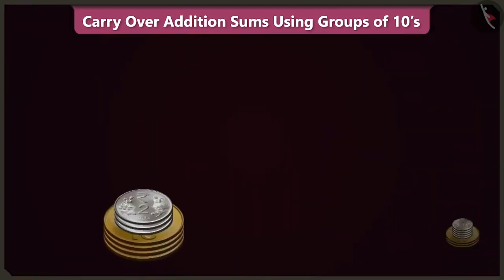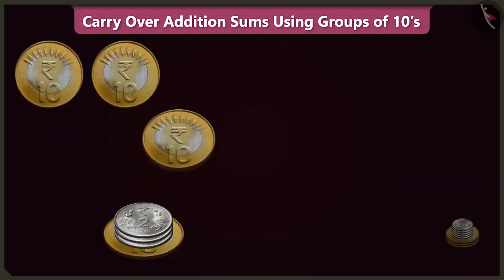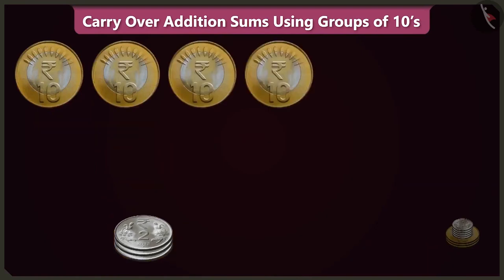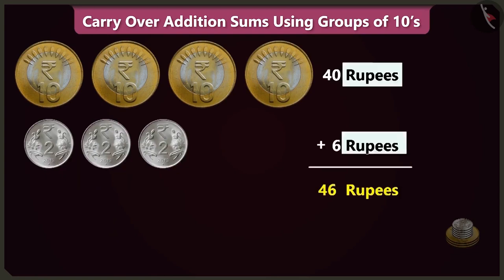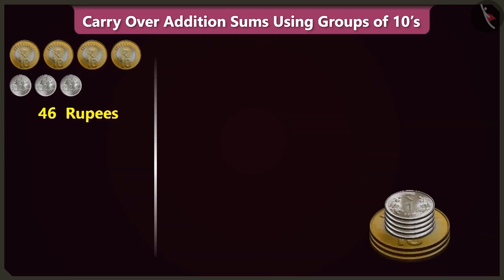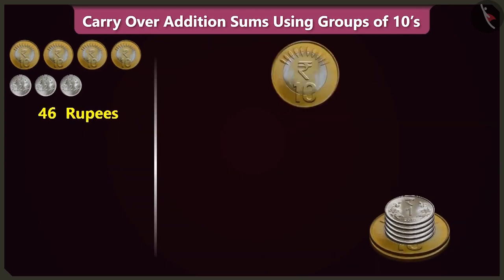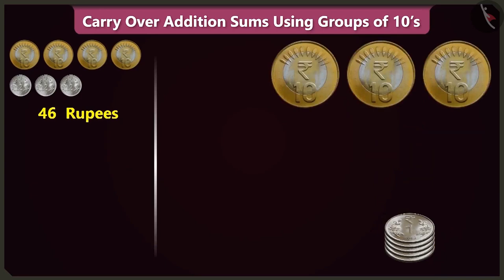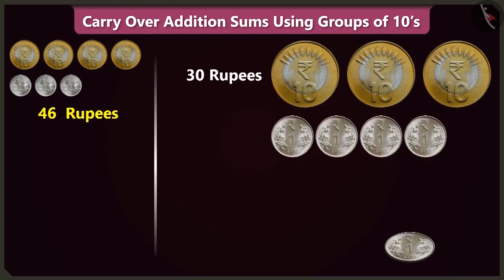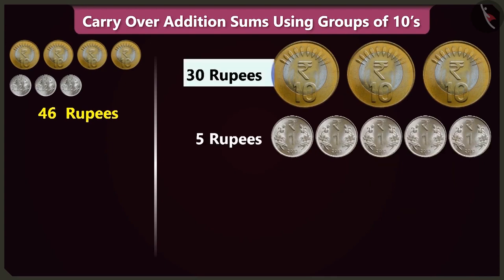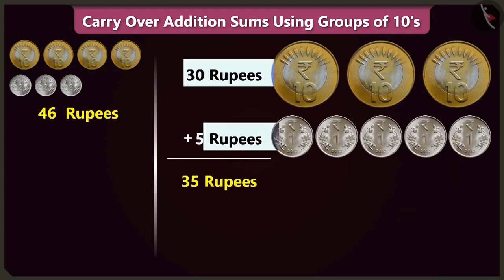In this pile of coins, there are 1, 2, 3 and 4 coins of 10 rupees, which is 40 rupees. And 3 coins of 2 rupees, that is 6 rupees. So 40 and 6 — there are 46 rupees. In this pile of coins, there are 1, 2 and 3 coins of 10 rupees, which is 30 rupees. And 1, 2, 3, 4 and 5 one-rupee coins. So there are 30 and 5 — 35 rupees.